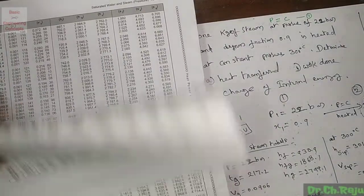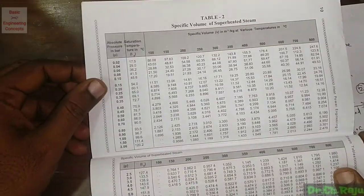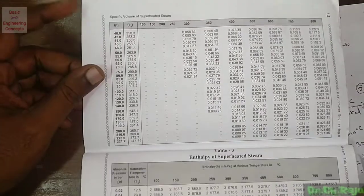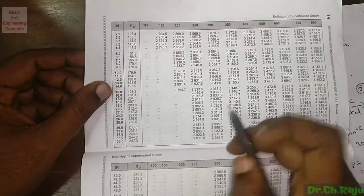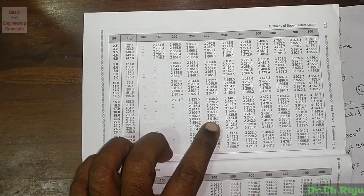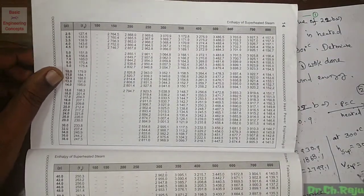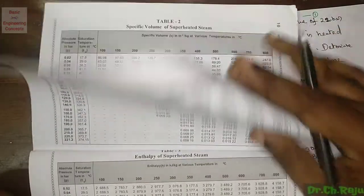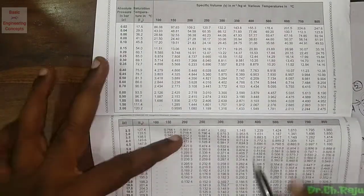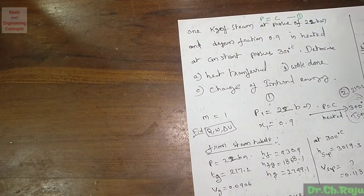From the superheated steam tables at 22 bar and 300°C: enthalpy h_sup = 3019.3 kJ/kg, and specific volume V_sup = 0.1134 m³/kg.